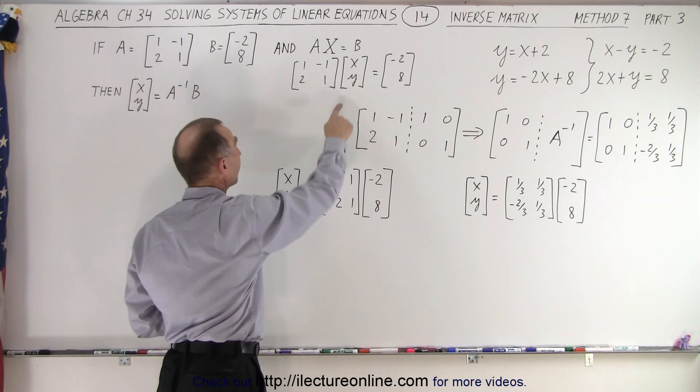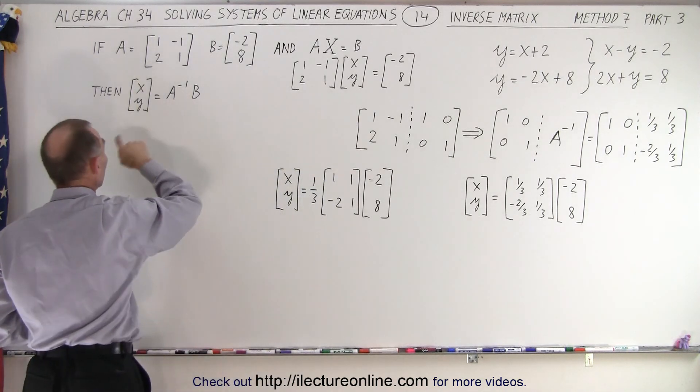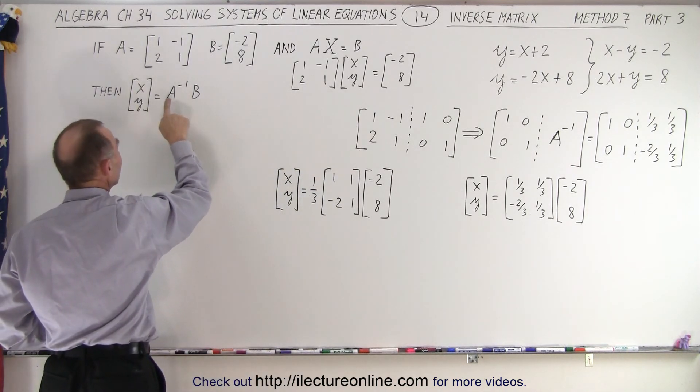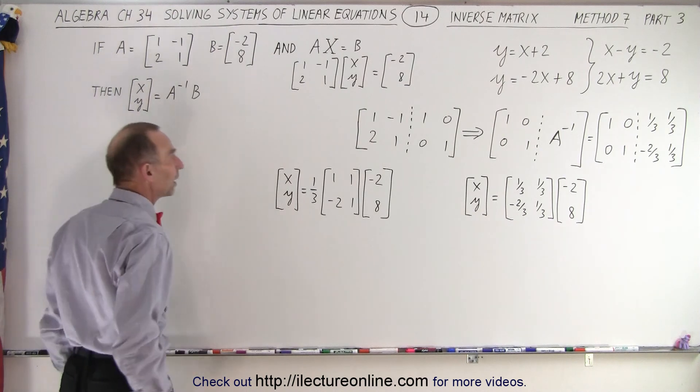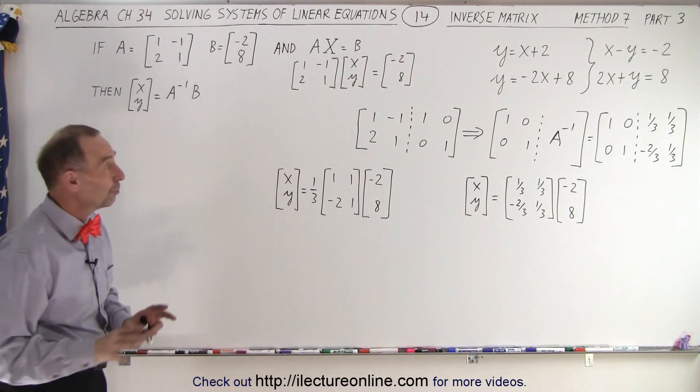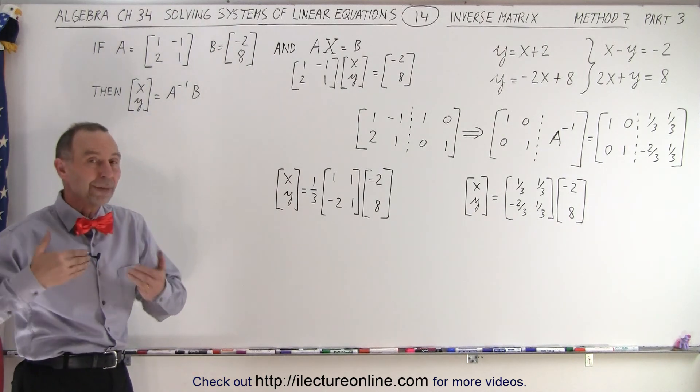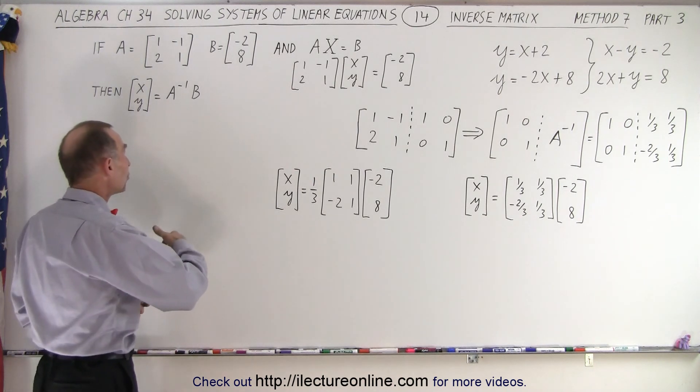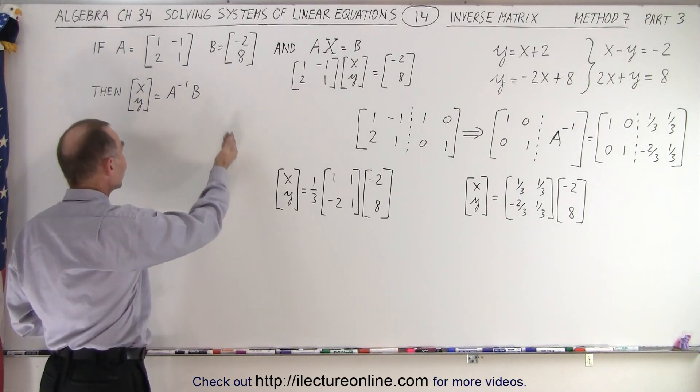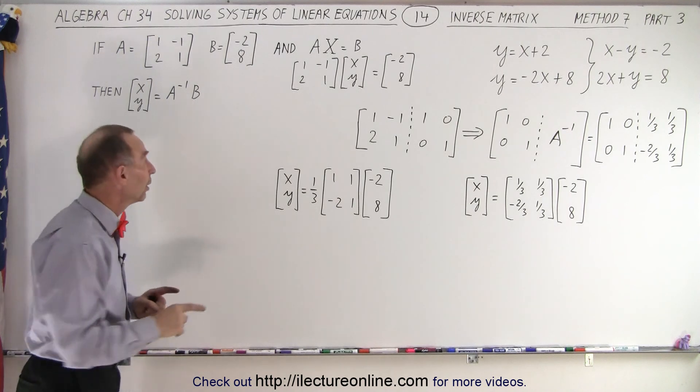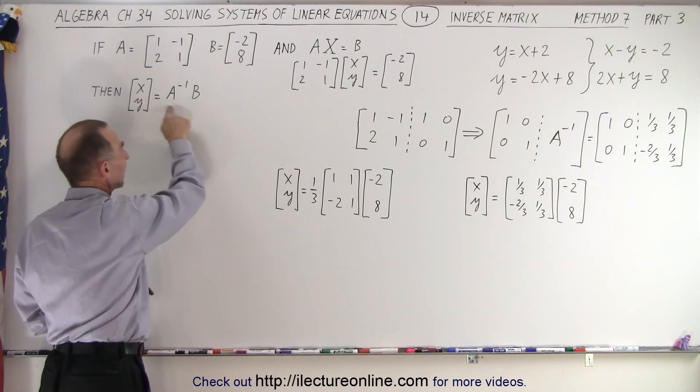And then to solve for the x and y matrix, essentially the x and y coordinates, we take the inverse of matrix A and multiply it by B. In the last two videos, we gave you the two methods to take a 2 by 2 matrix and convert the matrix into the inverse matrix. Now we're ready to show you how to do this multiplication.